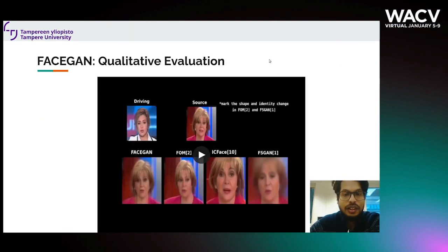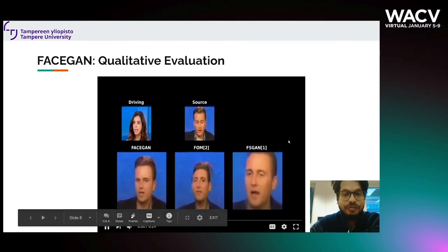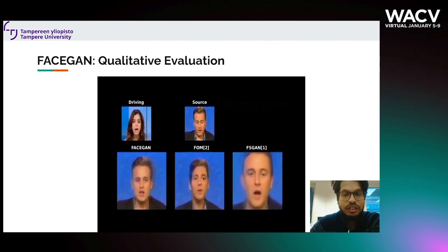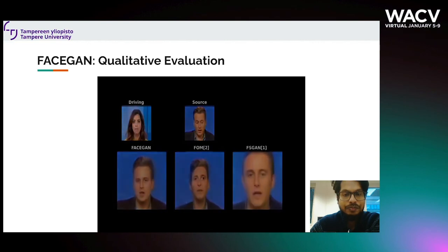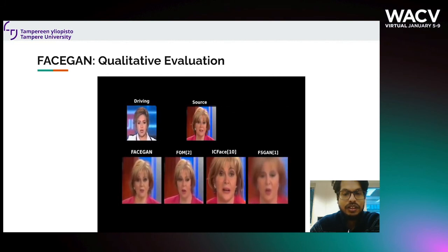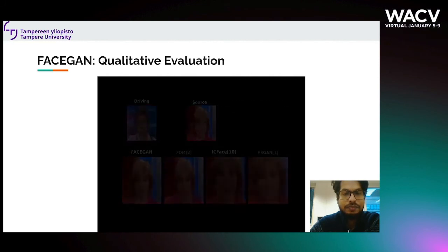Qualitatively, FaceGAN has better identity preservation than FOM and FSCAN. FOM clearly takes the shape of the driving face, distorting the final output. In the second example, we compare IC-Face along with FOM and FSCAN. IC-Face has better identity-preserving capability but the motions are really bad because it only operates on action units.